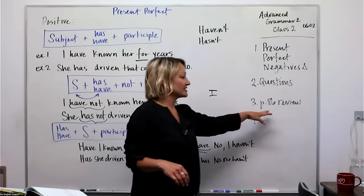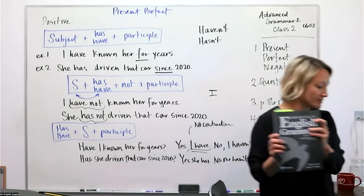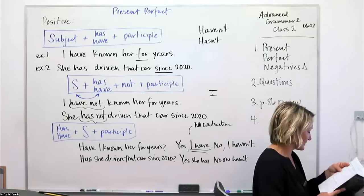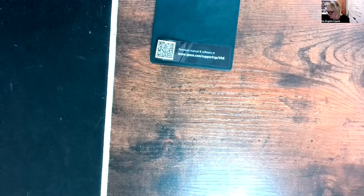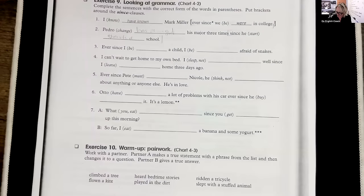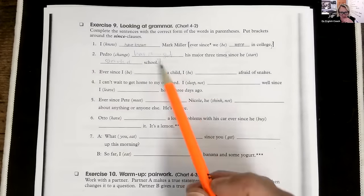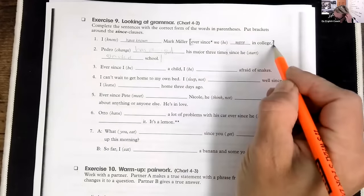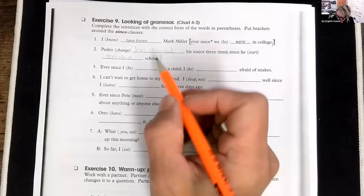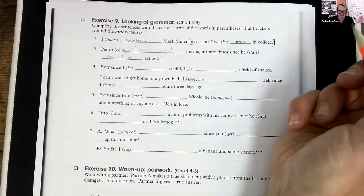The book we're using today is 'Fundamentals of English Grammar.' Let's review page 86, which was homework from last class. Exercise 9 says: complete the sentences with the correct form of the verb, and put brackets around the 'since' clauses. Remember, a clause is just a part of a sentence. These little lines — brackets — are different from parentheses.